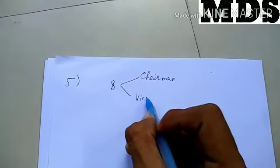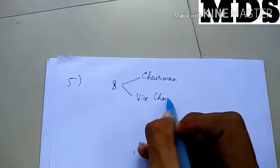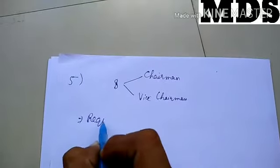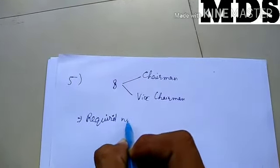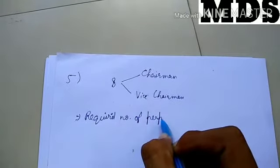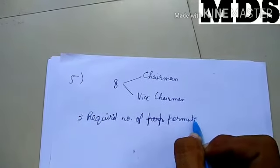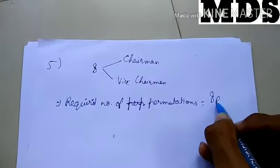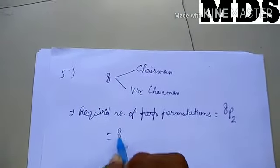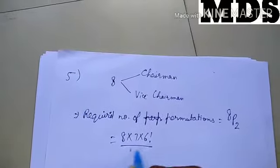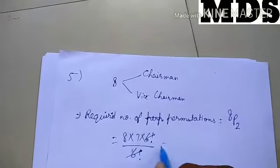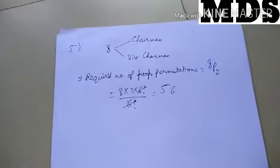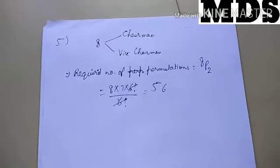For question 5, the required number of permutations will be 8P2 for selecting chairman and vice-chairman. This will be 8 × 7 × 6 factorial divided by 6 factorial, which cancels to give 56. So in 56 ways we can select our chairman and vice-chairman.